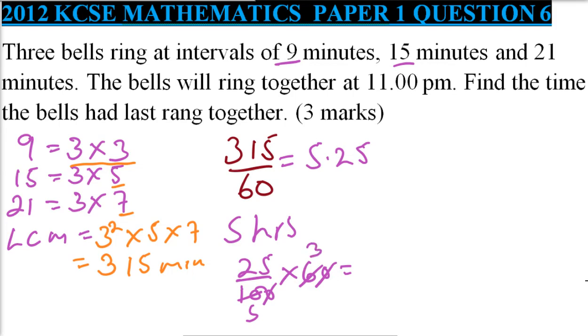So they can ring together every 5 hours 15 minutes. Now, they will ring together at 11 PM. We write 11 PM in 24-hour format - this is the same as 23:00. Then we subtract because this is the time they ring together.